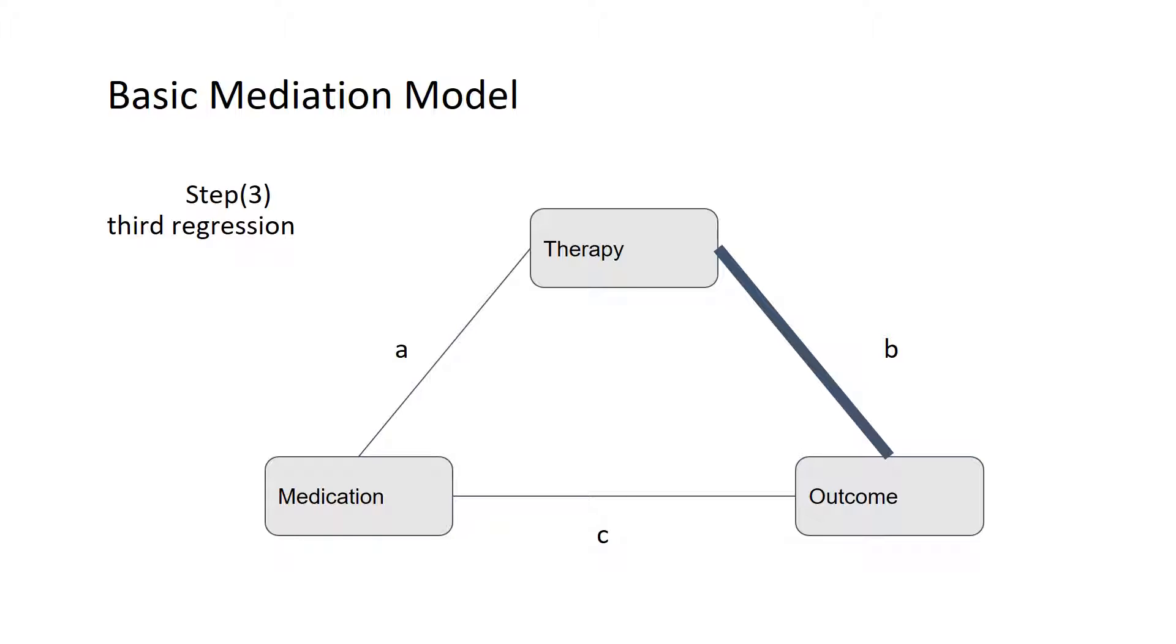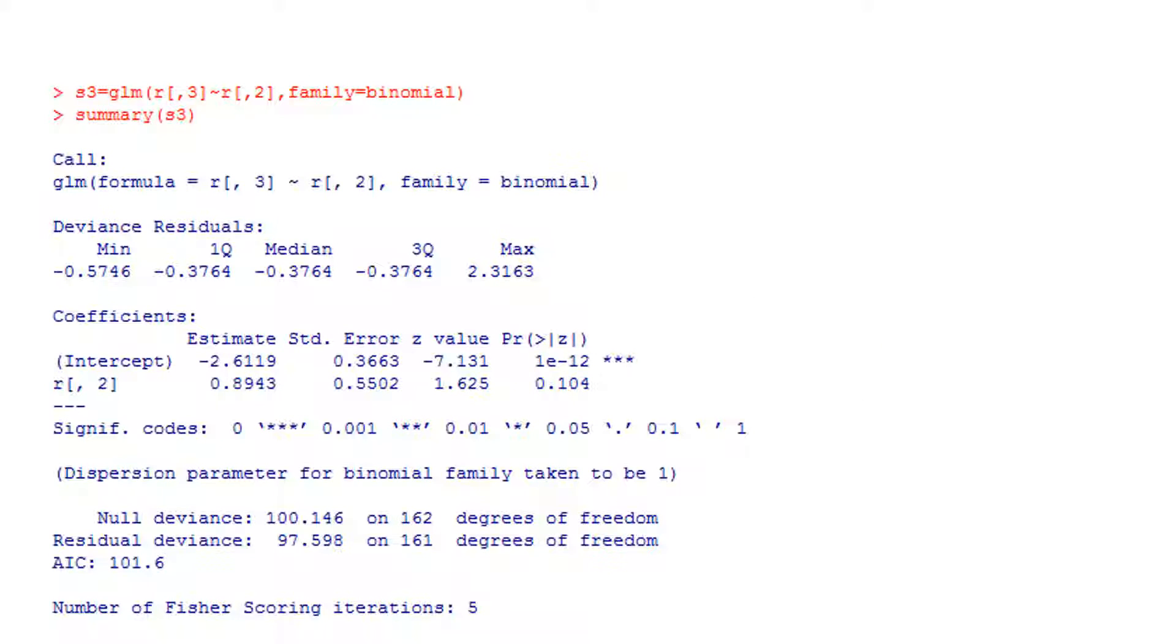We go to the third step, where we should establish a correlation between outcome and mediator, or in this example, success of treatment of depression on behavioral therapy. We put the equation and we found that there is no significant relationship between the success of depression treatment and the mediator, which is cognitive or behavioral therapy. It came with p-value 0.1, so it is not statistically significant.